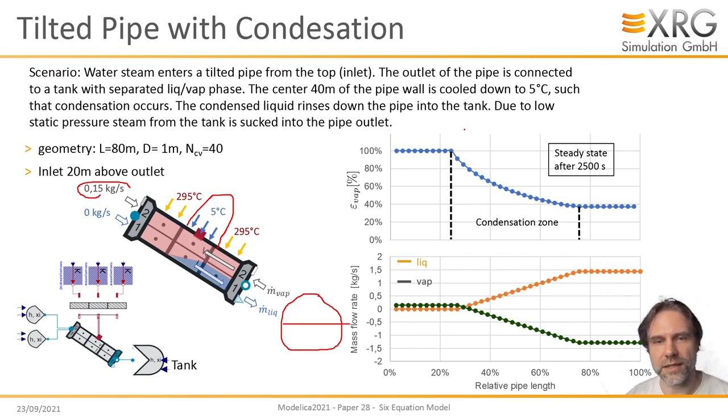So what happens is, first we have liquid. The liquid should rinse down the pipe into the tank. But because we have this high condensation rate, there is a low pressure. And then through this low pressure, vapor should be sucked from the tank into the pipe. And this is what we see in the steady state here. Here is the vapor volume fraction over the length. You see it's first constant. In the condensation zone, it goes down. Then it stays constant again. And for the mass flows, we see the vapor is first positive. Mass flow is going from inlet to outlet. Then it's getting negative because there it's going from outlet to inlet. For the liquid, there is first no liquid. Then liquid goes up towards the outlet. Okay, so that looks good.